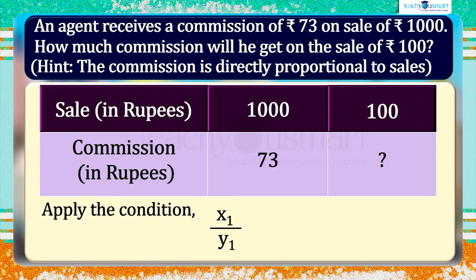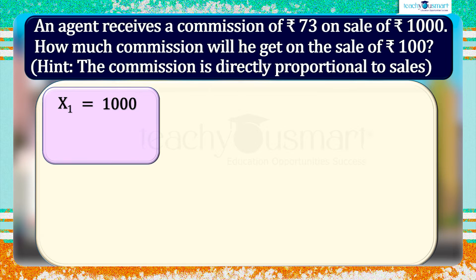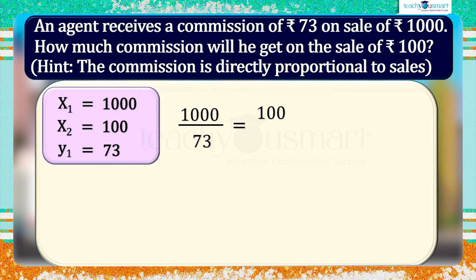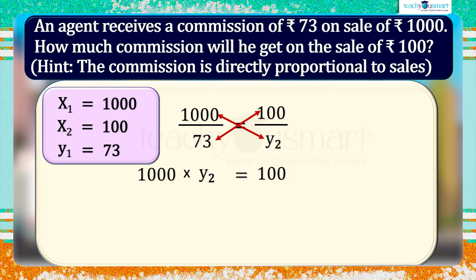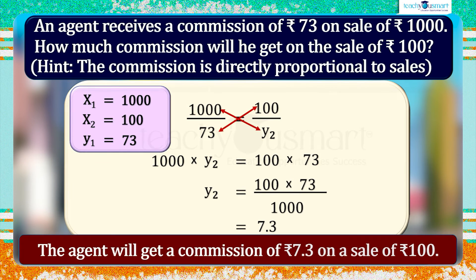Applying x1 by y1 equals x2 by y2: we take x1 equals 1000, x2 equals 100, and y1 equals 73. Then, 1000 divided by 73 equals 100 divided by y2. By cross multiplying, we get 1000 multiplied by y2 equals 100 multiplied by 73. That is, y2 equals 100 multiplied by 73 whole divided by 1000, which equals 7.3. Therefore, the agent will get a commission of 7.3 rupees on the sale of 100 rupees.